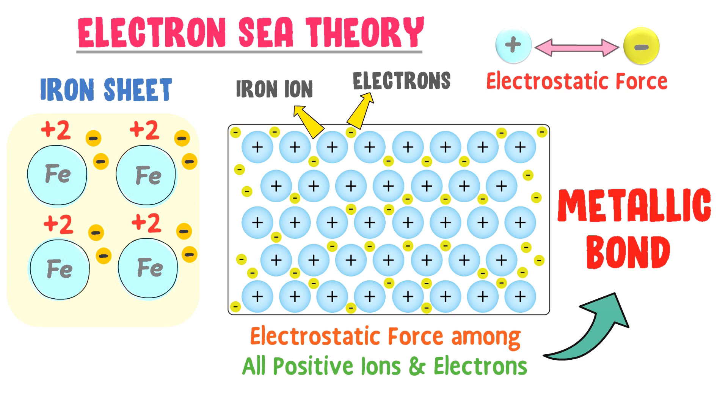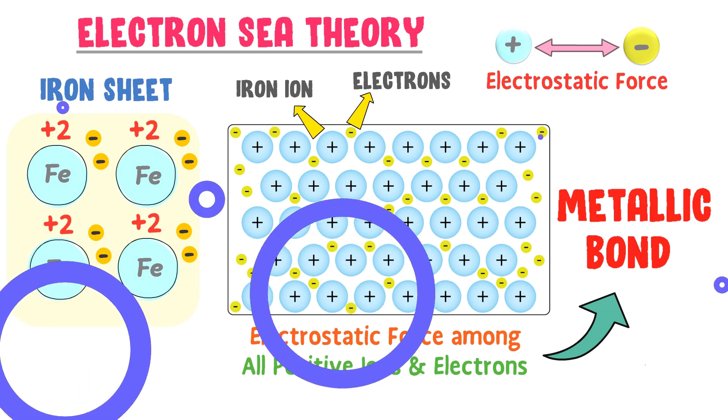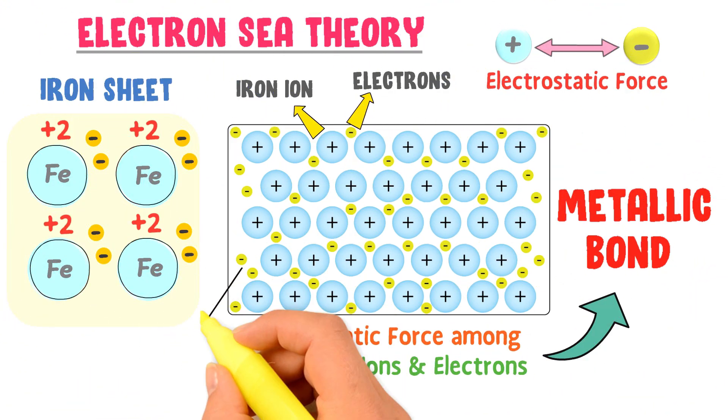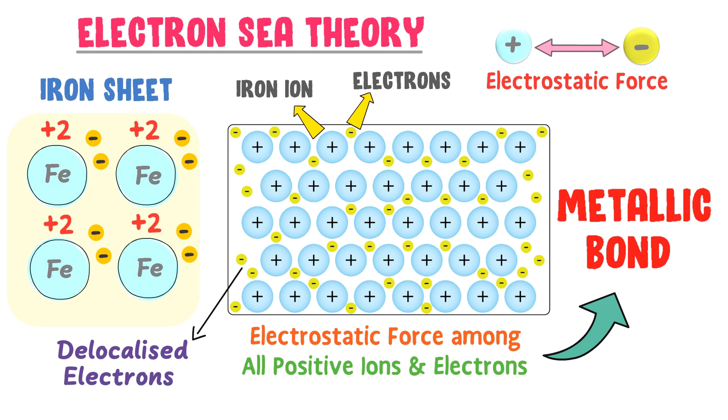Note down that these lost electrons do not belong to any individual atom. Rather, they form a cloud or sea of electrons in the lattice. Secondly, these electrons are called delocalized electrons because they move freely within the iron sheet or lattice. So, they are also good conductors of heat and electricity due to free electrons.